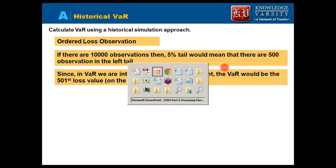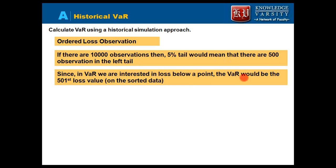In GARP examinations, sometimes the 500th element is cited as the VaR, and sometimes the 501st. However, per the Kevin Dowd textbook, since VaR is the loss beyond that point, the 501st value is taken as the VaR, not the 500th. There is a slight inconsistency, but we follow the chapter, which states the 501st ordered observation is the VaR value.